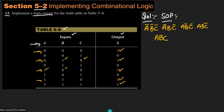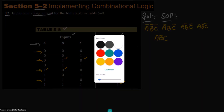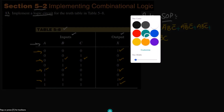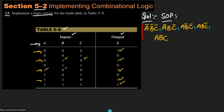After identifying all the minterms, I add them together to get the output. That summation is the Sum of Products (SOP) form for this question, and it is now straightforward to implement as a circuit — the same way I have been implementing circuits given a Boolean expression.